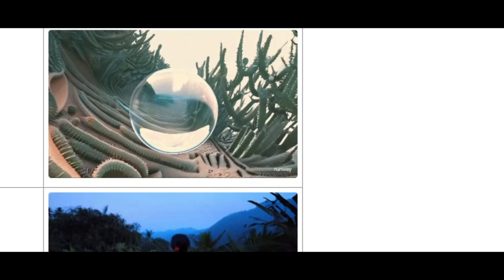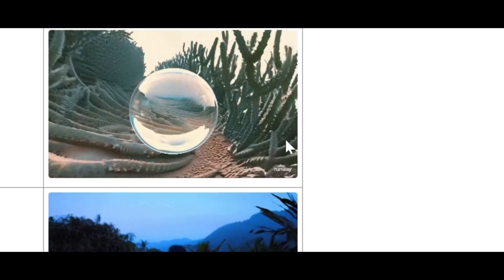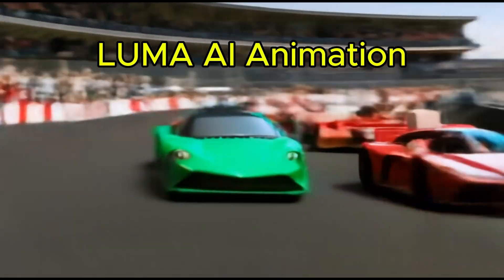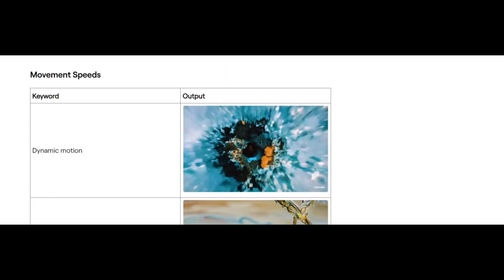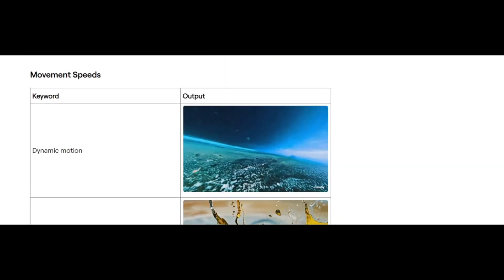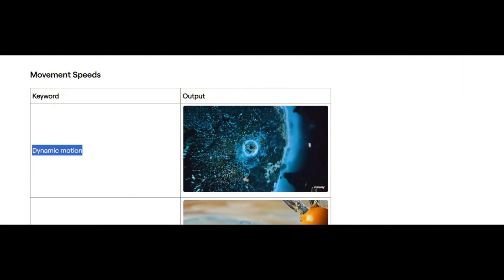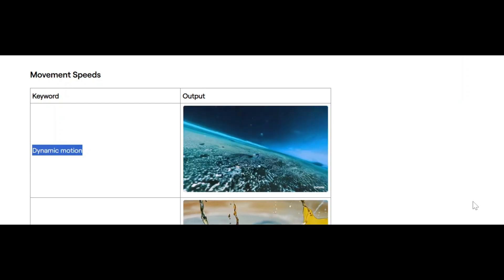Look at the quality when the camera movement is really fast. The video definitely has higher quality compared to Luma AI. Movies in high speed and dynamic motion, or drone views from Gen 3 videos, are extraordinarily great. However, there are still some issues.